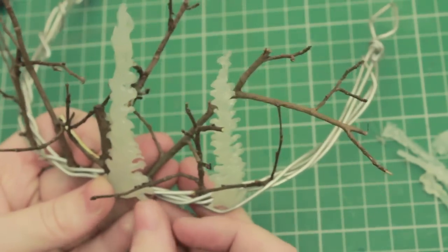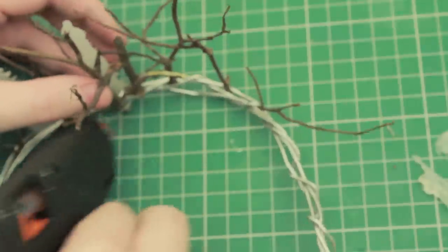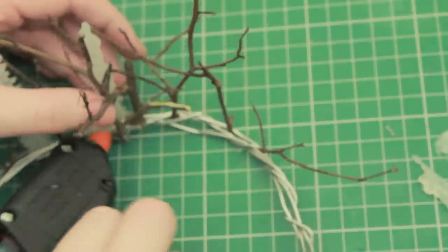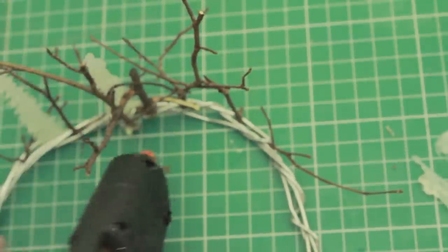Once you've glued down the main amount of the icicles, we're going to start covering the wire because we don't want the wire to be something that people can see. So we're just going to cover it with a glue gun.